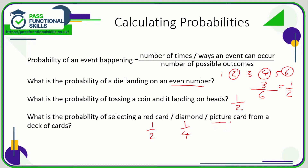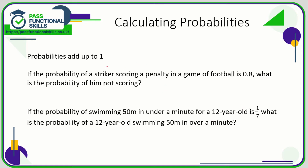What's the probability of selecting a picture card? A picture card is the jack, queen, or king — not the ace. In a pack of cards there's a jack, queen, and king for each of the four suits, so that's 3 times 4 = 12 cards out of a total of 52. This simplifies to six over 26, then to three out of 13. Don't worry about needing to be an expert on decks of cards, but you are expected to understand dice and coins.